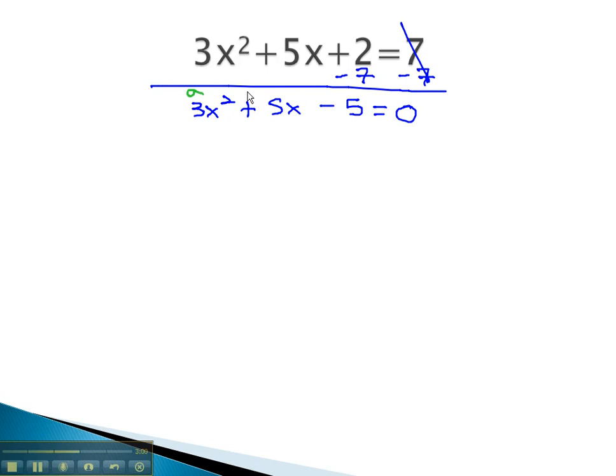We can now look at this and identify what a, b, and c are, in order to plug them into the quadratic formula. The quadratic formula says x is equal to the opposite of b, or negative 5, plus or minus the square root of b squared, 5 squared, minus 4a, which is 3, times c, which is negative 5, all over 2a, which is 6.